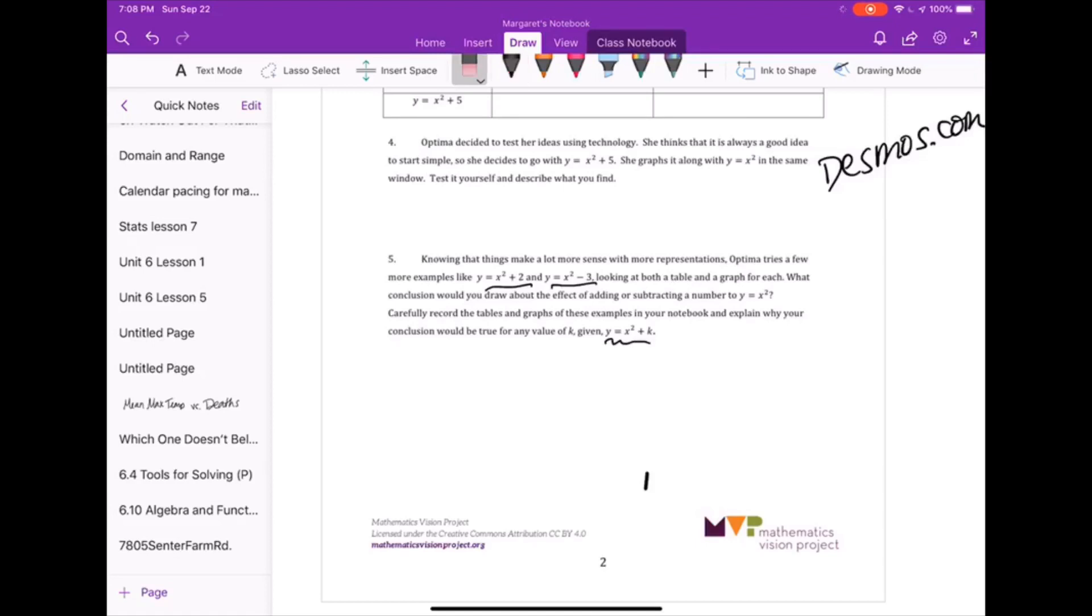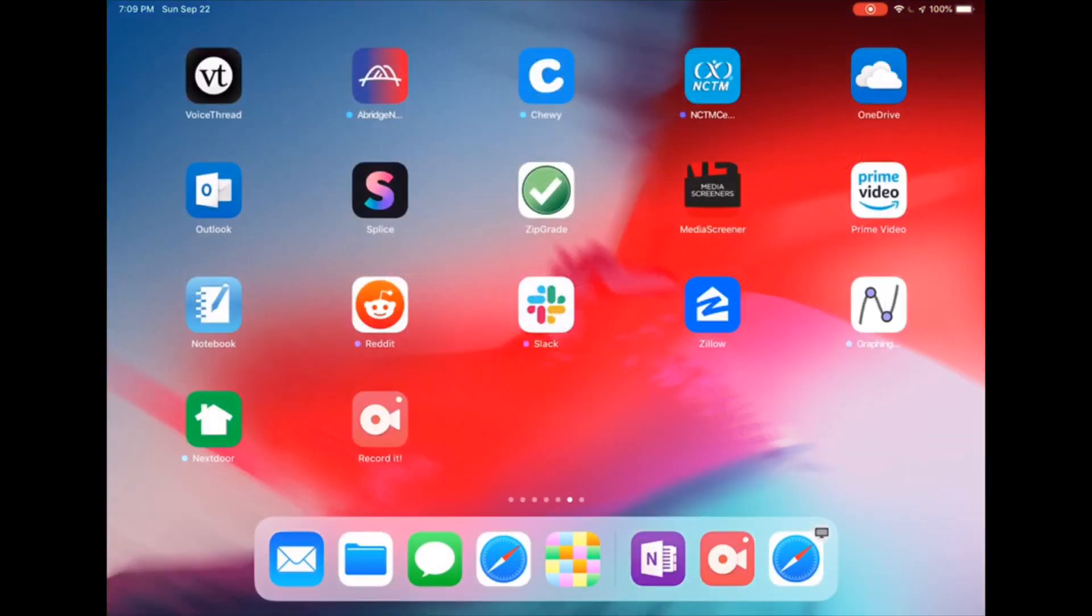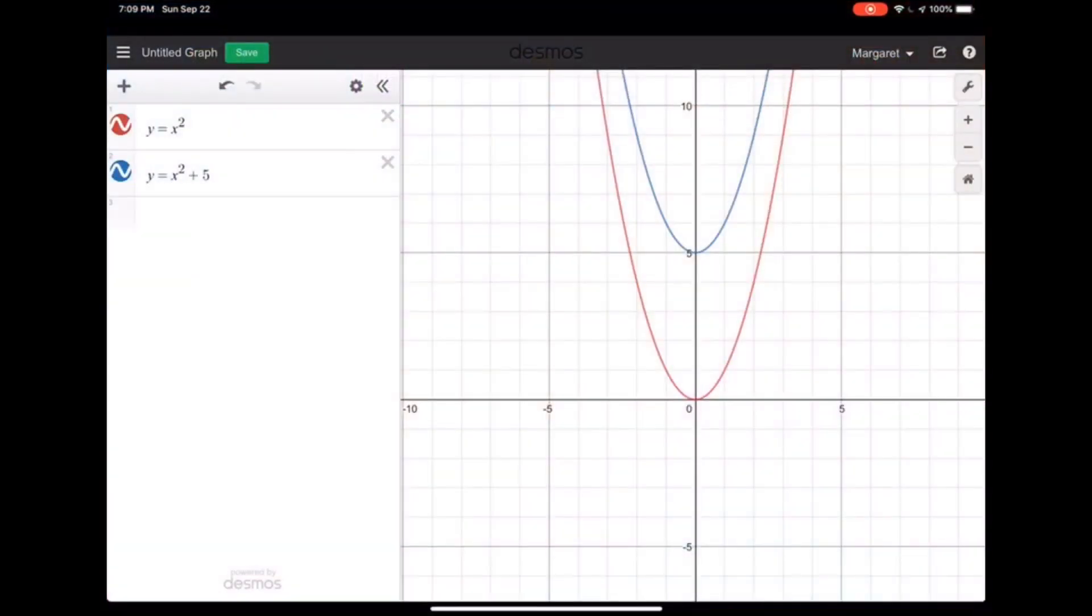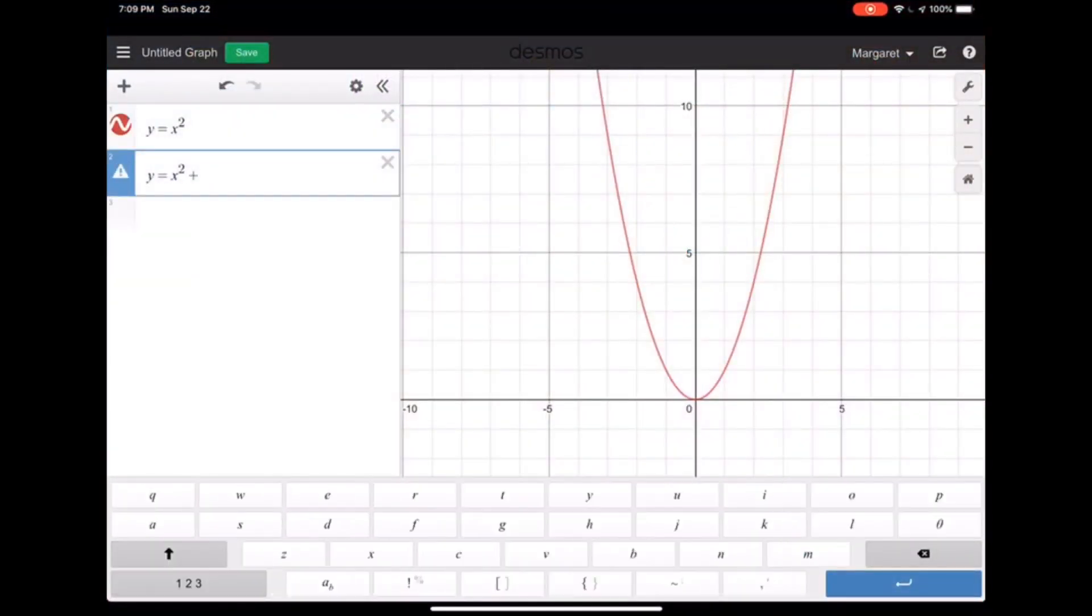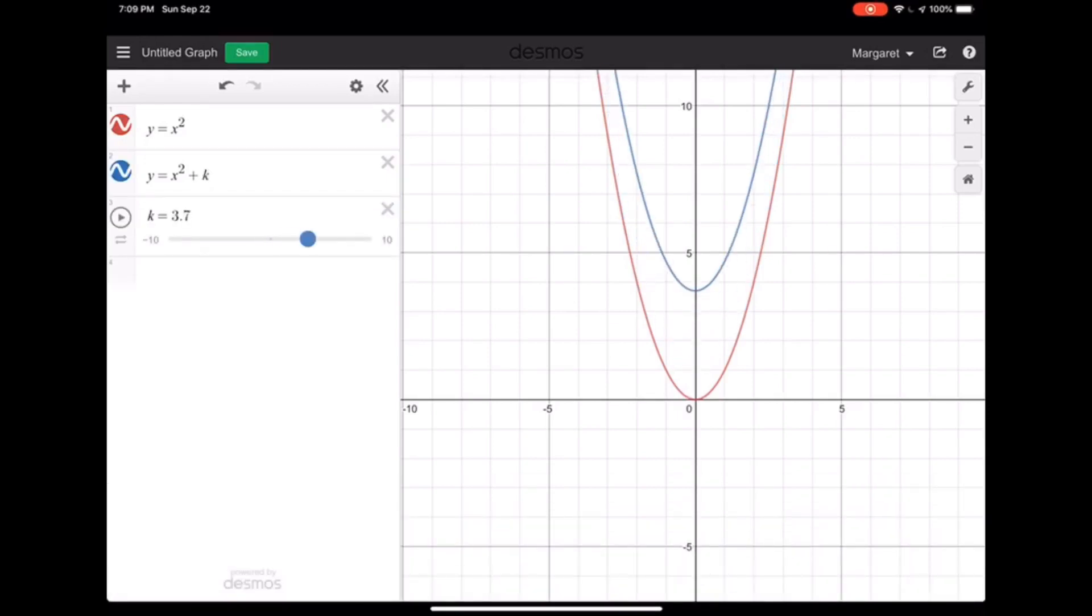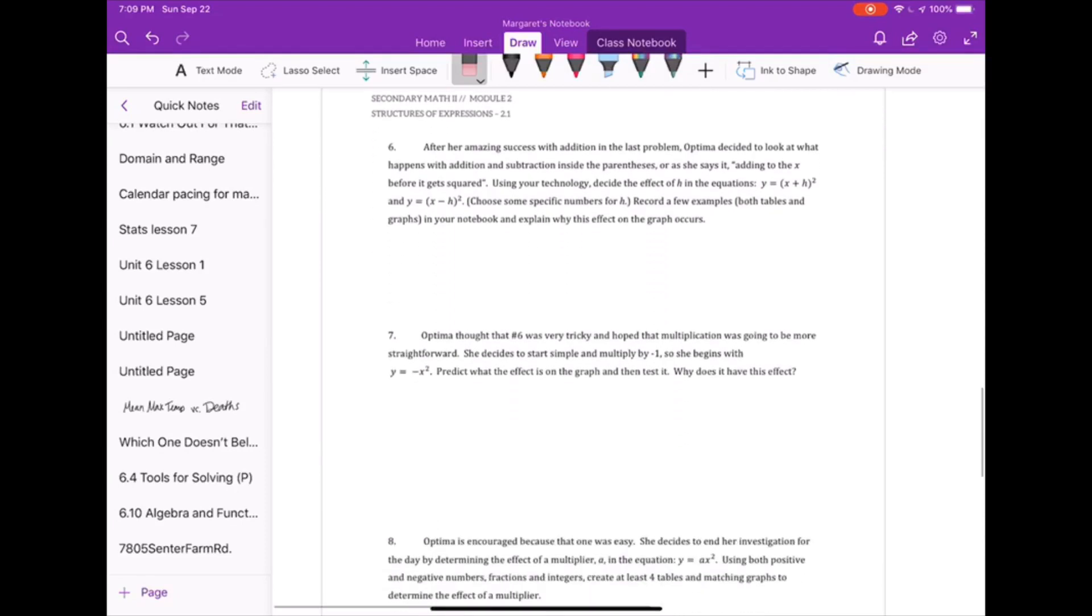So one nice thing that you can do in Desmos is, you can put this as that generalization, that k, and add a slider. And then this slider can change to be different numbers, and you can make your predictions based on what you're seeing. So I want you to take a moment and go make those predictions for x squared plus k. Okay, I'm going to move on to number 6.